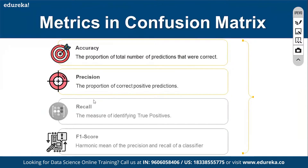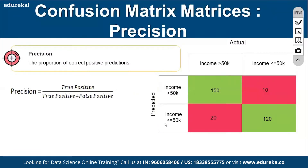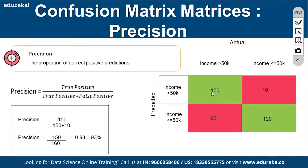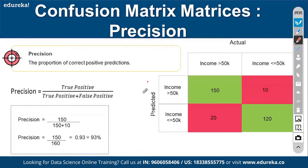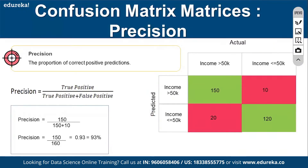Precision is the proportion of correct positive predictions. It takes only positive values: True Positive divided by (True Positive plus False Positive). For example, 150 divided by 160 gives approximately 93% precision.